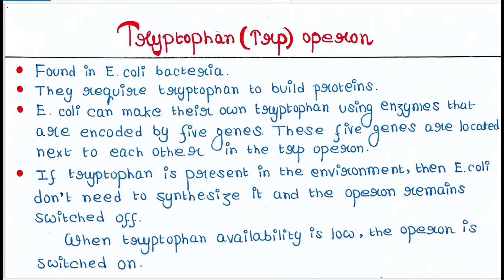Today we will discuss the tryptophan operon, which is also found in E. coli bacteria. These bacteria require tryptophan, just like us, to build proteins. Tryptophan is an amino acid, so they require it to build their proteins.